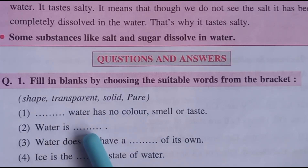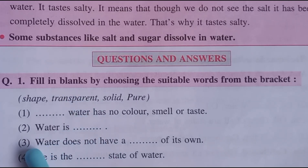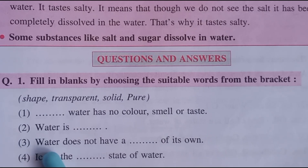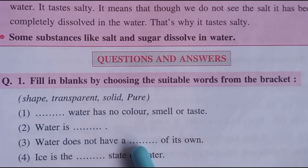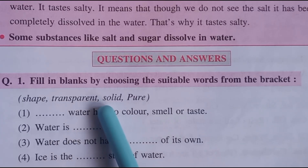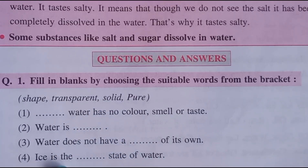Number 2: Water is blank. Answer: transparent. Water is transparent. Number 3: Water does not have a blank of its own. Answer: shape. Water does not have a shape of its own. Number 4: Ice is the blank state of water. Answer: solid. Ice is the solid state of water.